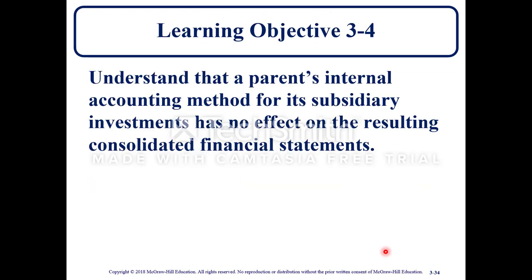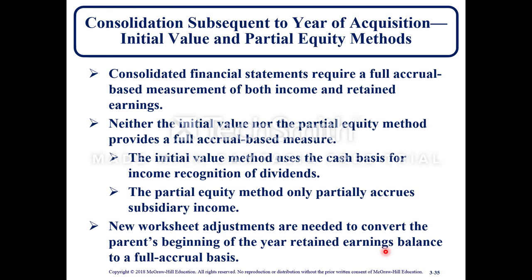Learning objective 3-4: understand that a parent's internal accounting method for its subsidiary investments has no effect on the resulting consolidated financial statements — it's purely internal. Consolidated financial statements require a full accrual-based measurement of both income and retained earnings. Neither the initial value nor the partial equity method provides a full accrual-based measure. The initial value method uses the cash basis for income recognition of dividends, and the partial equity method only partially accrues subsidiary income. New worksheet adjustments are needed to convert the parent's beginning-of-year retained earnings balance to a full accrual basis.